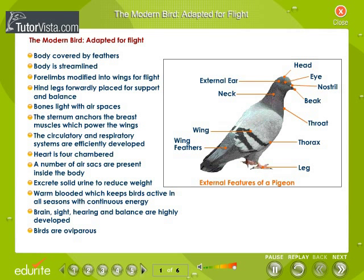The modern bird is adapted for flight. The external features of a pigeon are shown here. The body is covered by feathers and has a streamlined body. The forelimbs are modified into wings for flight.